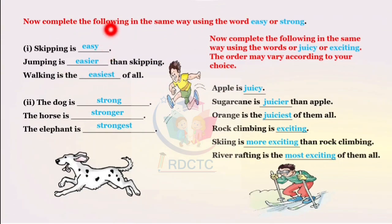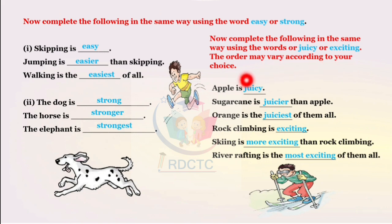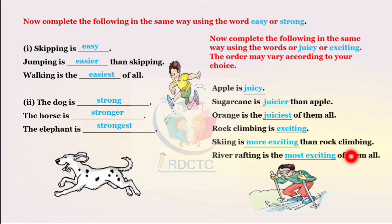Now complete the following using the words easy and strong. Skipping is easy. Jumping is easier than skipping. Walking is the easiest of all. The dog is strong. The horse is stronger. The elephant is the strongest. Now complete using juicy and exciting. Apple is juicy. Sugar cane is juicier than apple. Orange is the juiciest of them all. Rock climbing is exciting. Skating is more exciting than rock climbing. River rafting is the most exciting of them all.